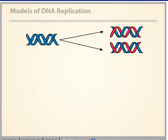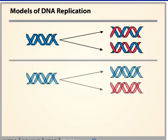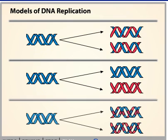There are other models to consider as well. For example, the old DNA molecule could be preserved and an entirely new DNA molecule could be produced from it. In yet another model, the result of replication would be two molecules with old and new DNA interspersed along each strand.